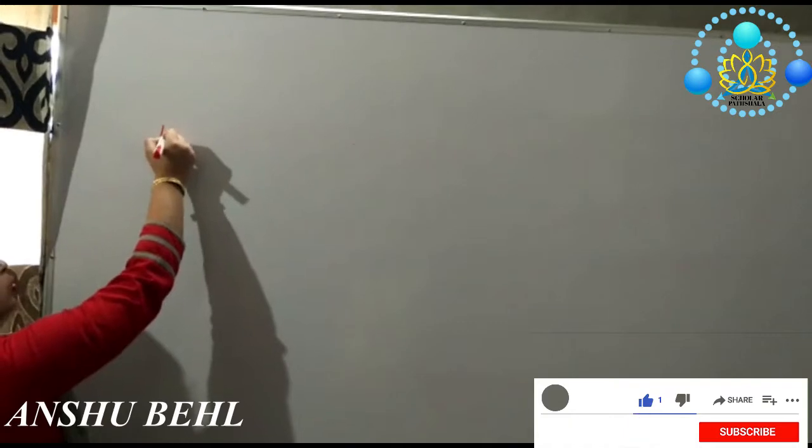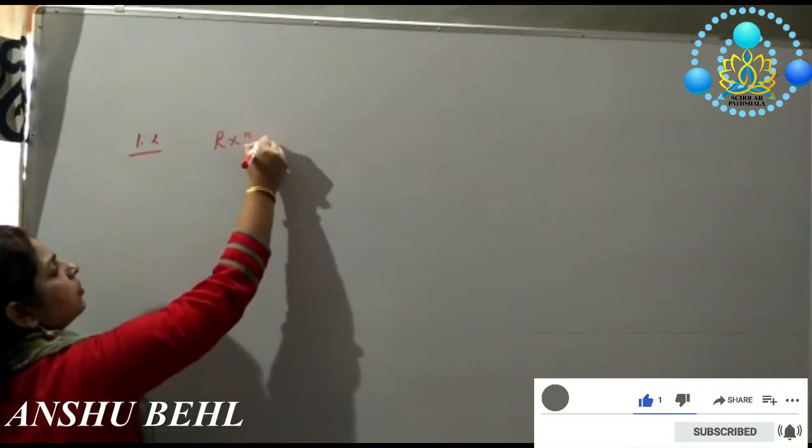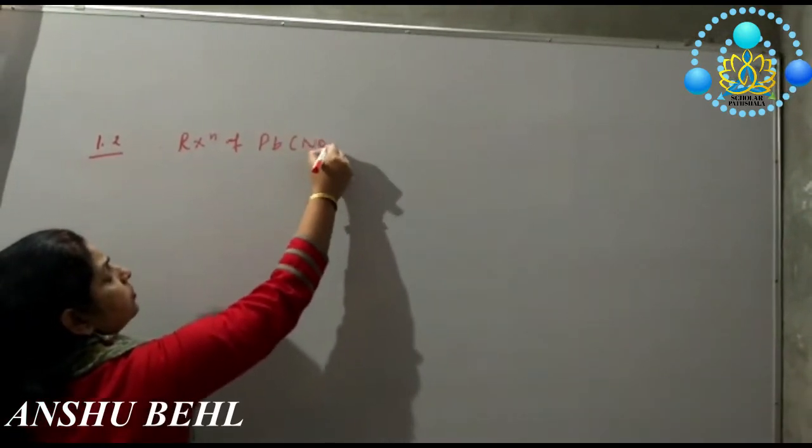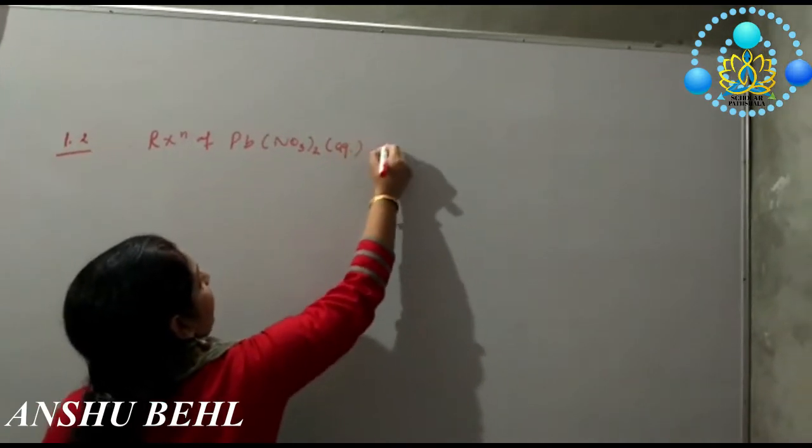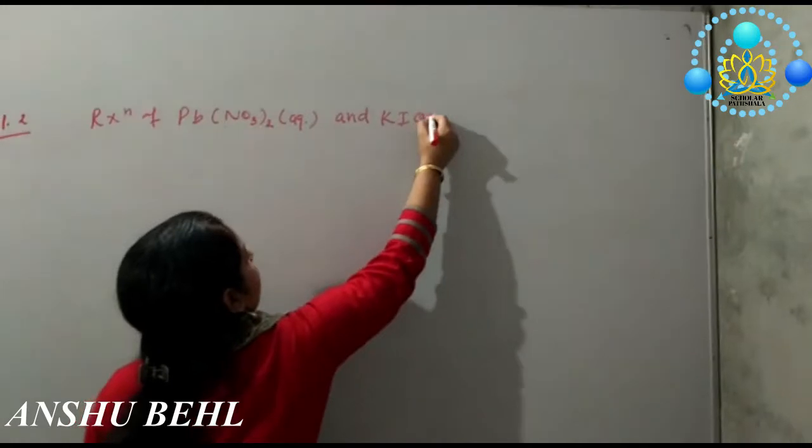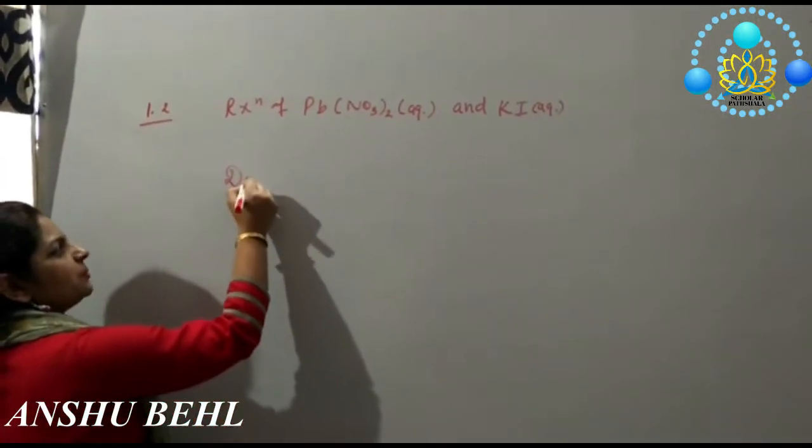Activity 1.2 is the reaction of aqueous lead nitrate and potassium iodide. This is a type of double displacement reaction.